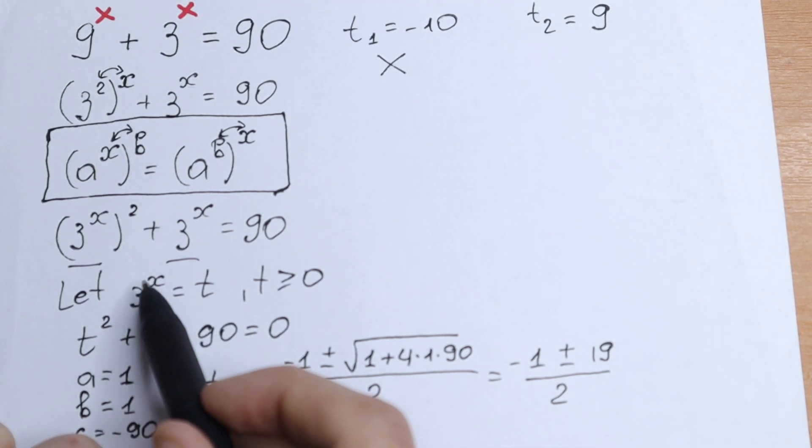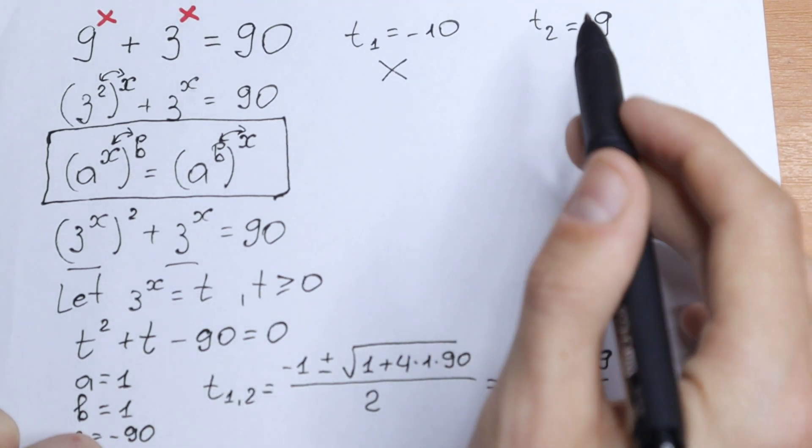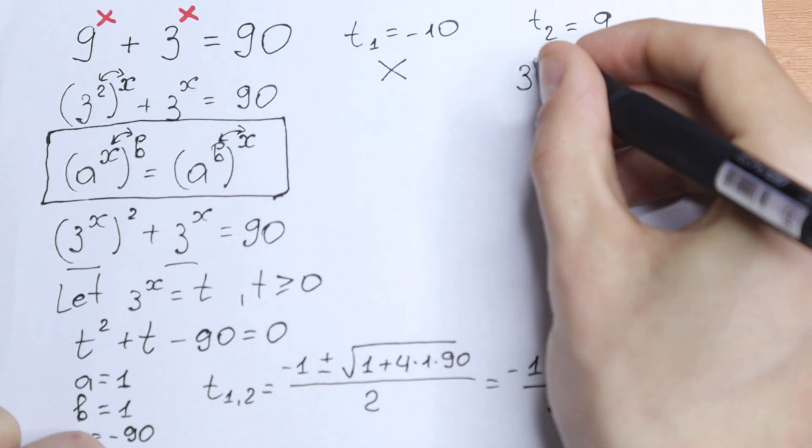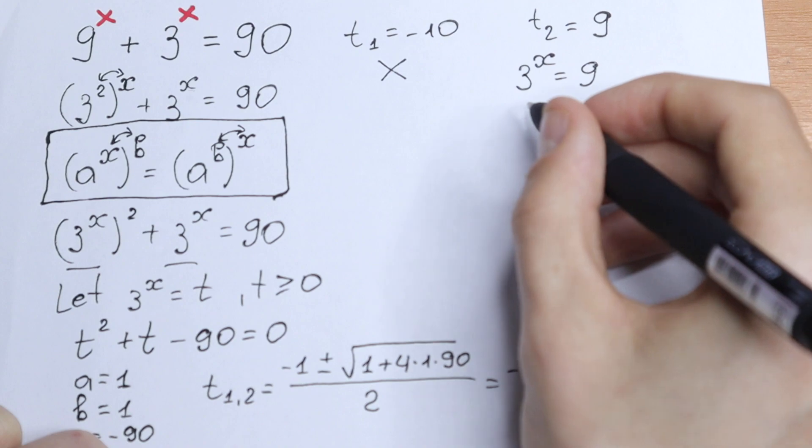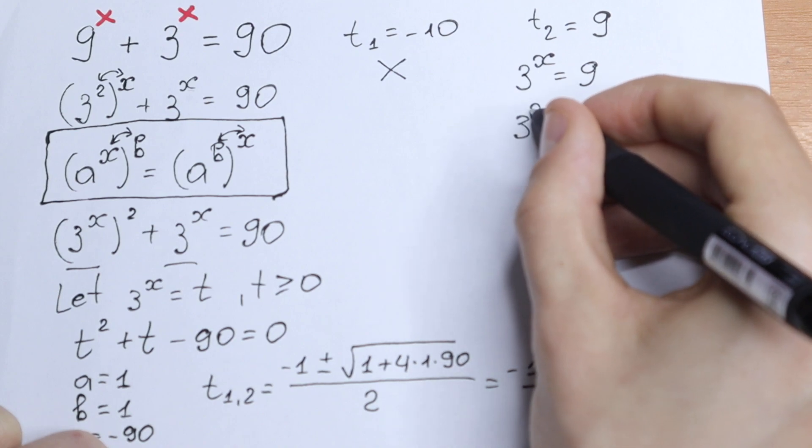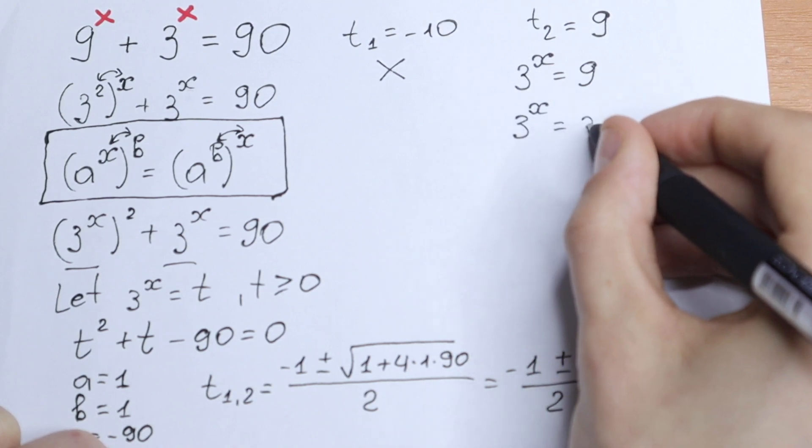We wrote that 3 to the power x equal to t but t equal to 9. So we will have our equation: 3 to the power x equal to 9. And from here classic exponential equation. 3 to the power x equal to 3 squared.